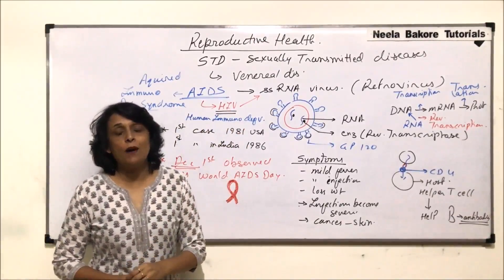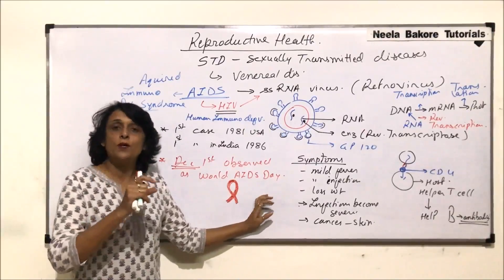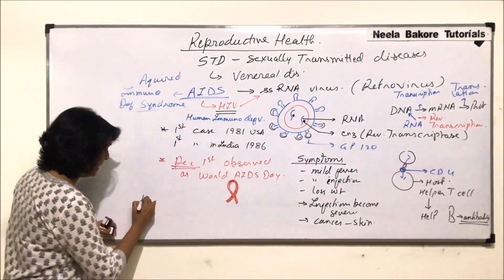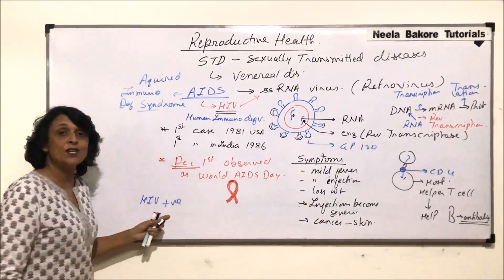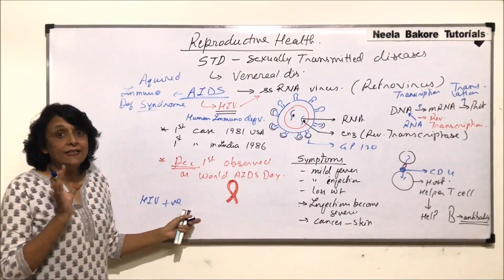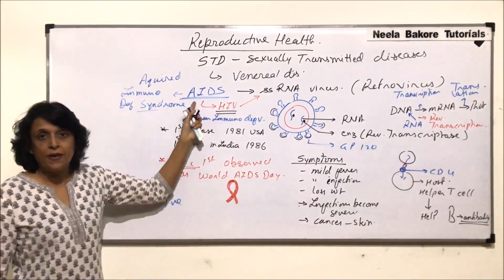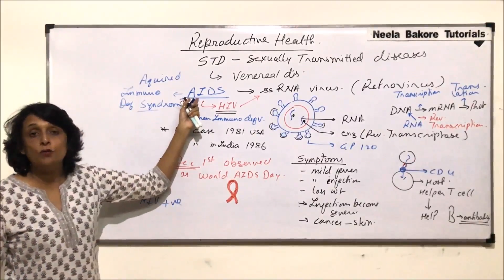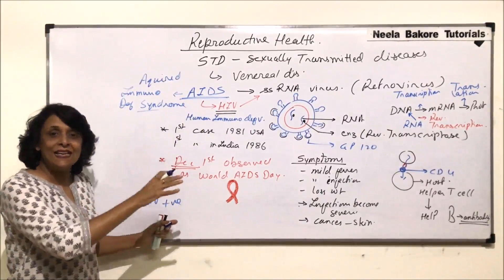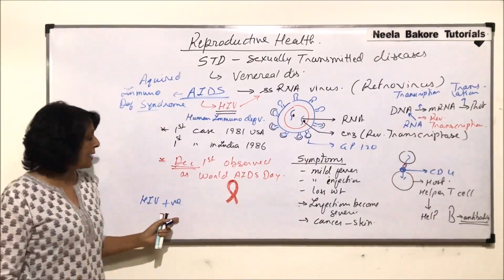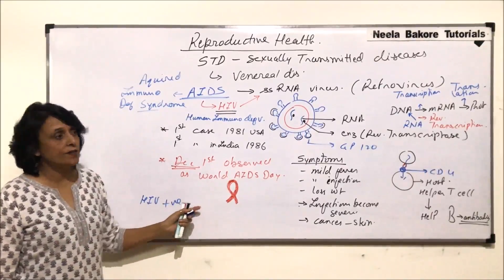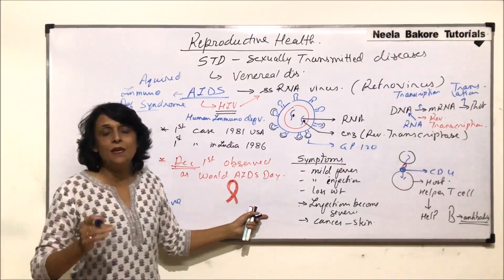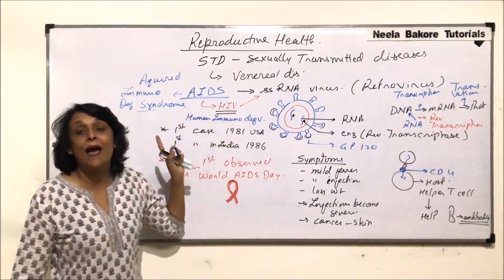When we say a person is HIV positive, we are not saying the person has AIDS. HIV positive means the person has the virus, but the disease has not yet manifested. The person is ultimately going to get the disease, but as long as it is not manifested, we call that person HIV positive. Once the helper T cells are destroyed and their number comes below a minimum limit, then we say the person now has AIDS.